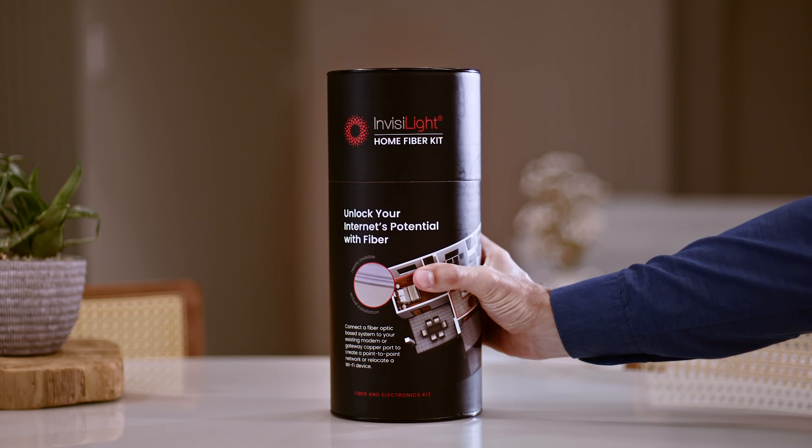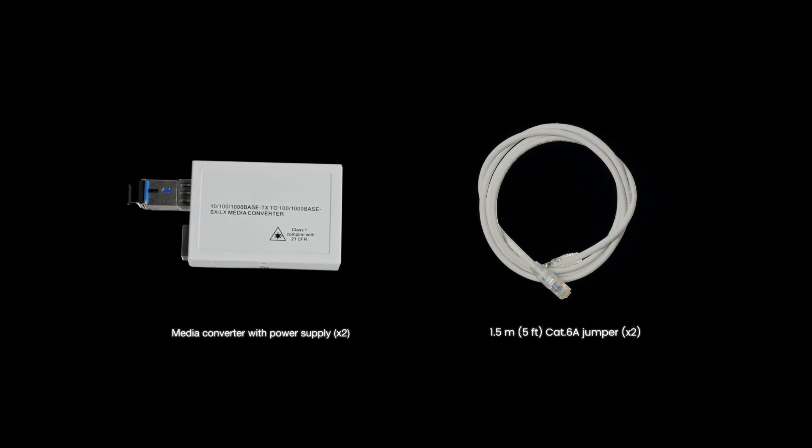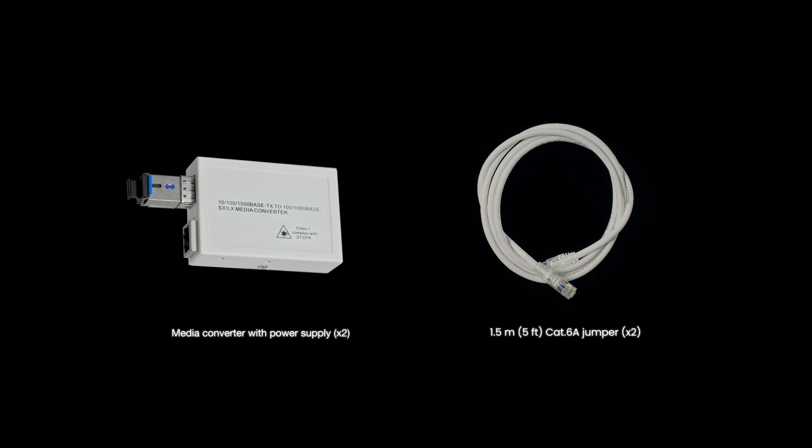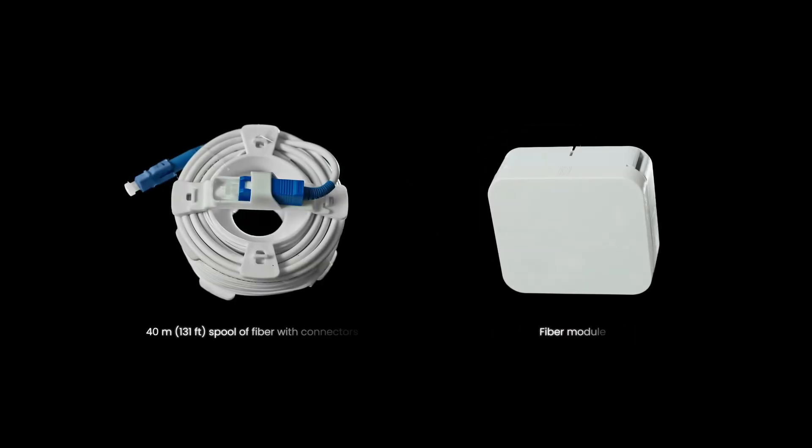Let's get started installing your kit. Your kit includes everything you need: two media converters with power adapters and ethernet cables, Invisalight fiber module and spool, cleaning wipes, installation adhesive, wall plugs, and tool.